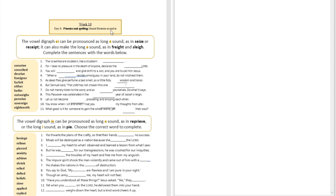A digraph in English is when you merge two vowels together. So when you have a vowel digraph, that's going to be like 'e' and 'i' — when you merge those two vowels together, they may be pronounced as the long E sound, like in 'seize' or 'receipt,' and sometimes they can make a long A sound as well, like in 'freight' or 'sleigh.' We are going to work through exercises to reinforce this understanding concerning 'ei.'